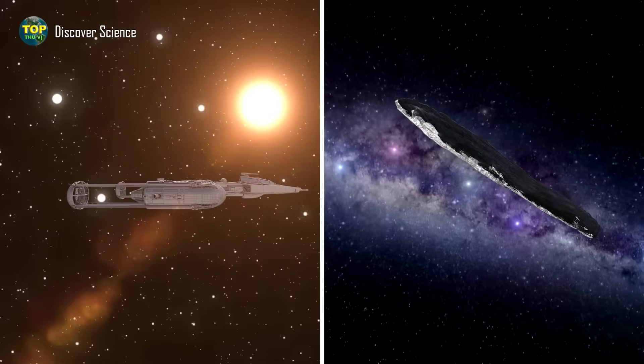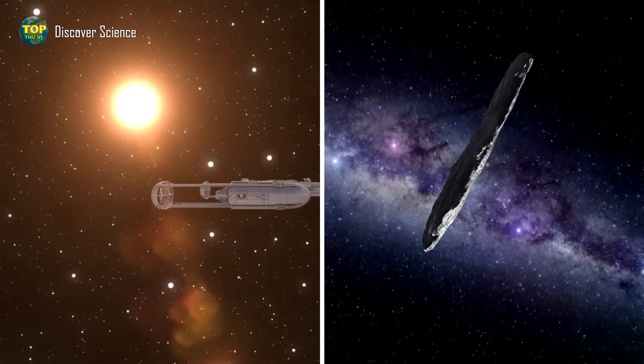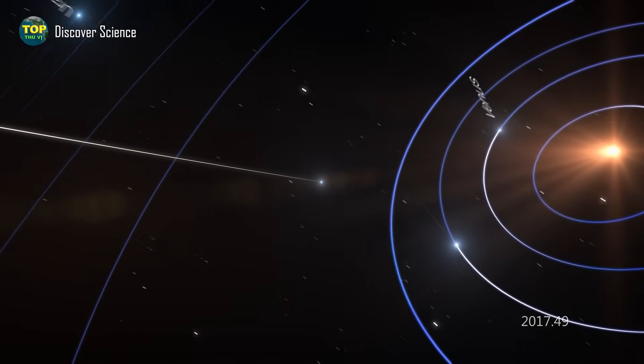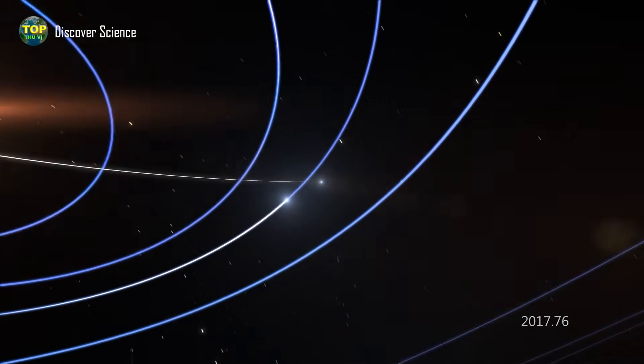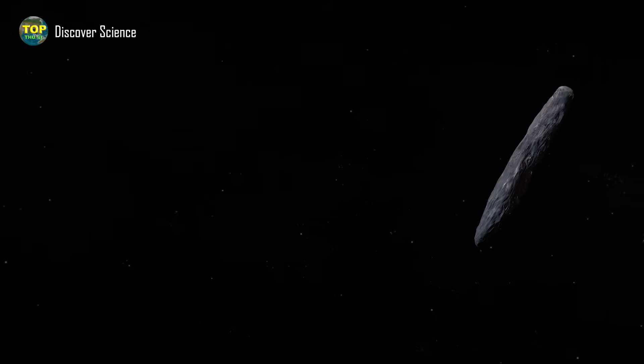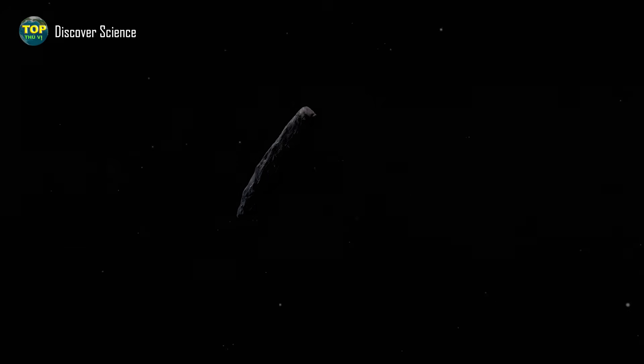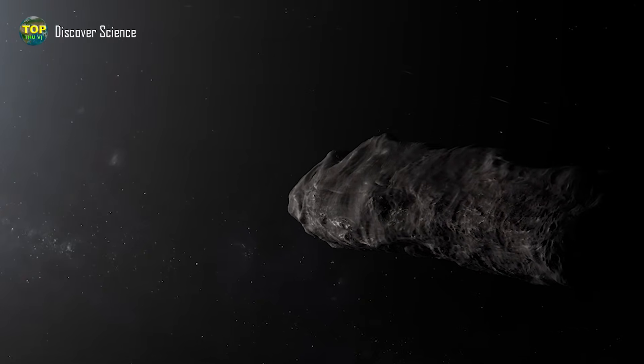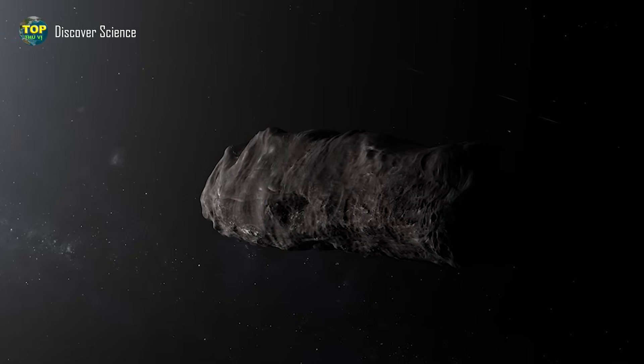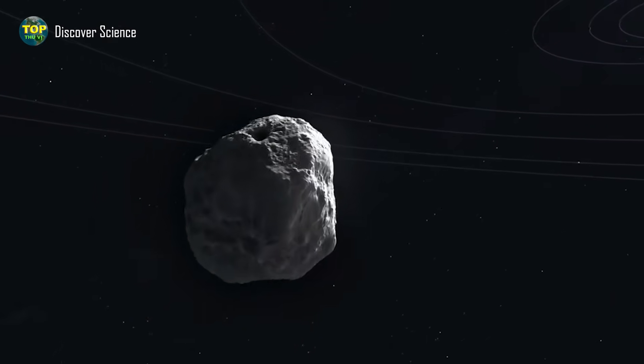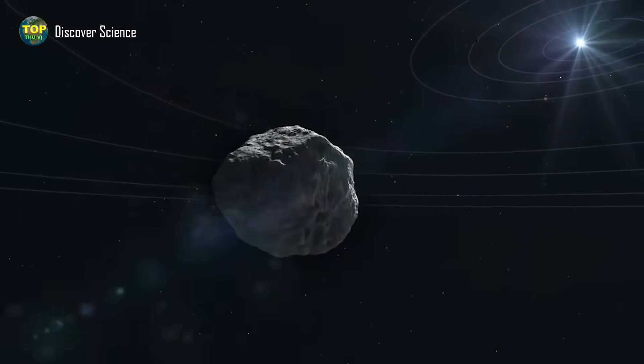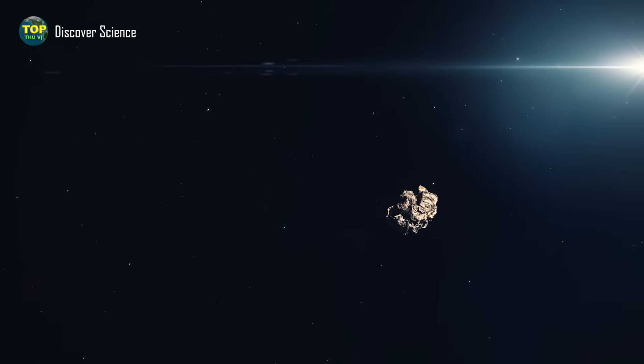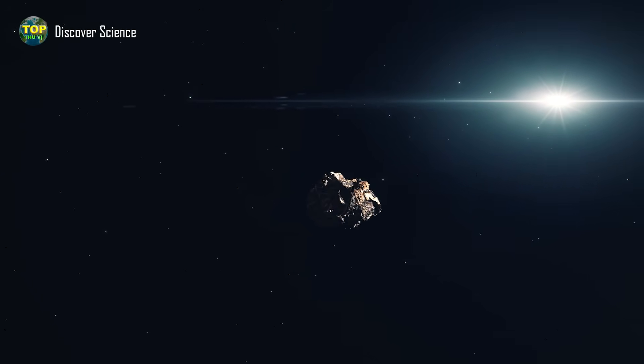'Oumuamua has left the solar system. It drifts in the endless darkness, leaving no sound, no message—only a brief streak in telescopes and in the minds of humanity. The appearance of an uninvited object like 'Oumuamua reminds us that the universe is still full of mysteries yet to be unraveled. We may never encounter 'Oumuamua again, but surely many more interstellar objects will visit us. Astronomers estimate that an object like 'Oumuamua passes through the solar system approximately once every year, but they are often very faint and difficult to detect, and until now, most have been missed. And who knows? Next time, we may discover, reach out, and understand the story they bring from the stars.